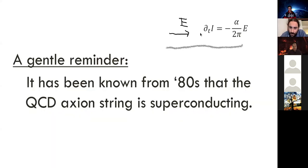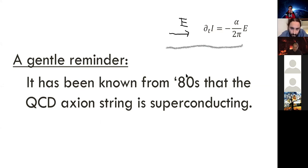There is also a more rigorous mathematical way to state the superconductivity using anomaly inflow. In this language, what is required is only the IR Lagrangian — the a FF-tilde or a GG-tilde coupling is enough to prove superconductivity. By using this anomaly inflow argument, one can show two interesting facts.